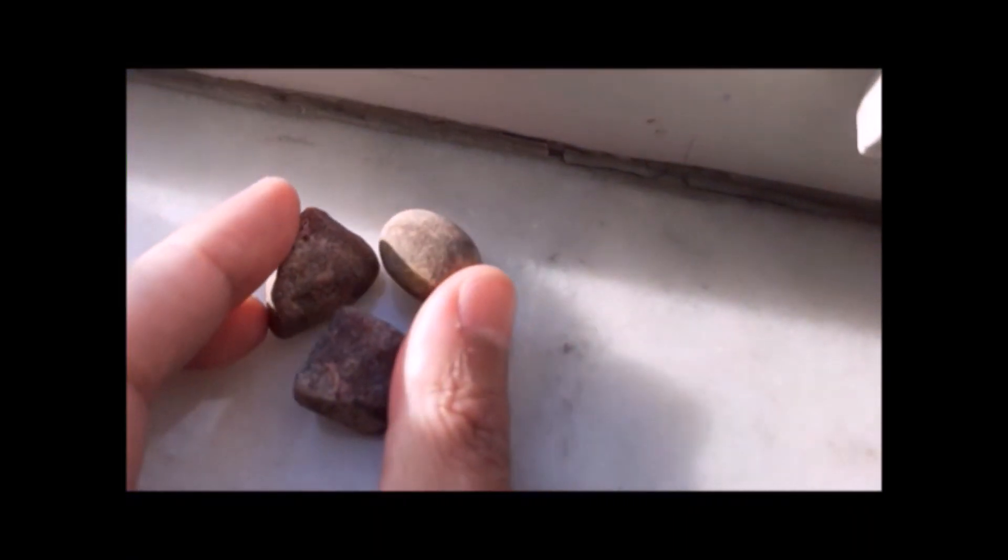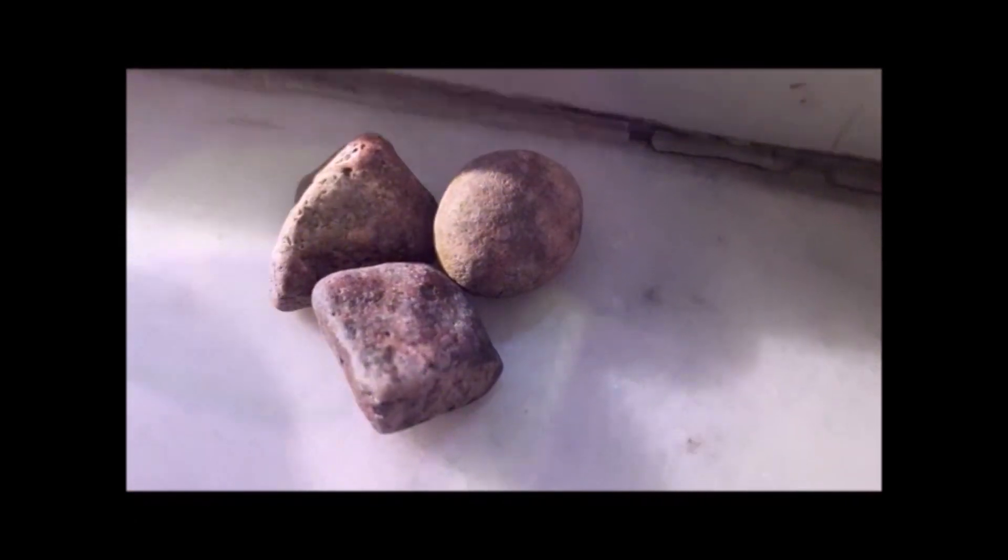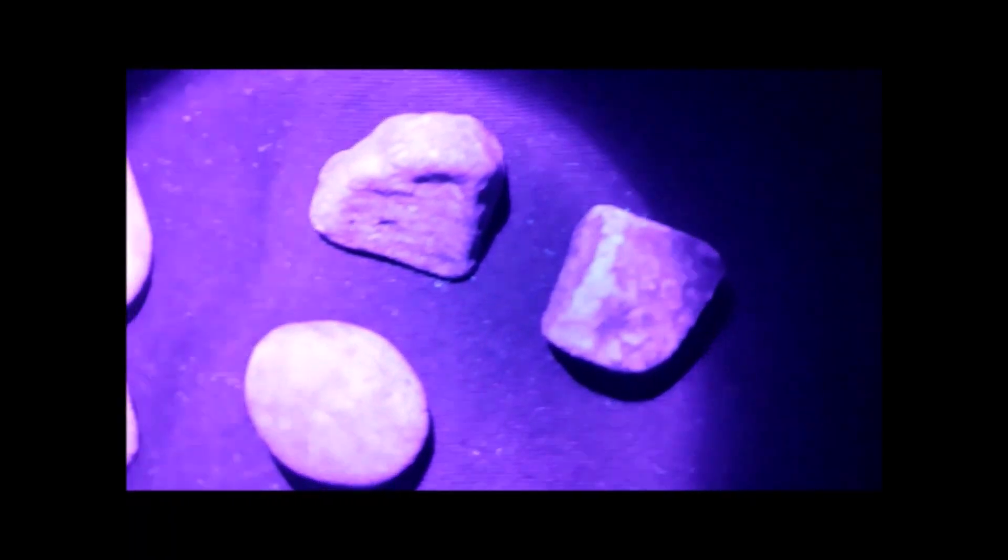However, not all ruby stones are created equal, and it is important to know how to properly identify and evaluate a genuine ruby. One of the most effective ways to do this is through ultraviolet light testing.